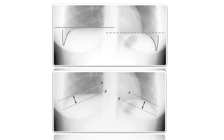The height of the dome — that is, the highest point of the diaphragm dome — is also very important. If the convexity is more than 1.5 centimeters, it is considered significant.